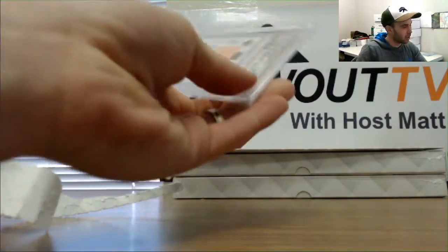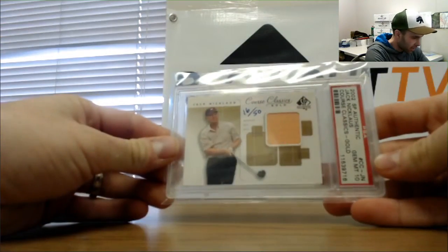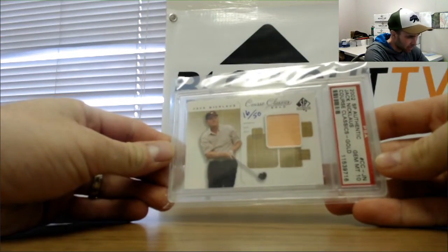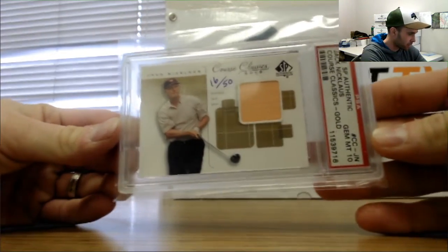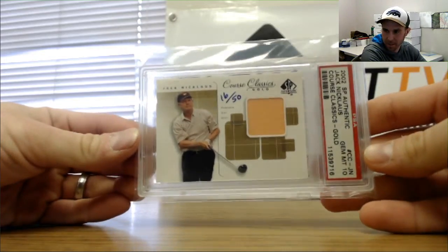And number two, oh I like this. Got a Jack Nicklaus 2002 SP Authentic gold shirt piece, 16 of 50, hand numbered. That's great as a PSA Gem Mint 10.